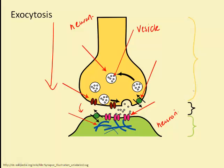The vesicle fuses with the neuron and releases neurotransmitters, which bind with a channel protein. When they bind with the channel protein, the channel protein opens up and allows sodium to enter into the second neuron. This initiates a nerve impulse in the second neuron, which means that the nerve impulse can continue along.